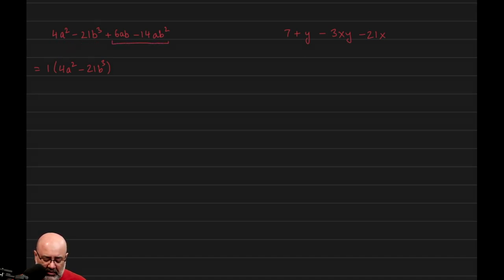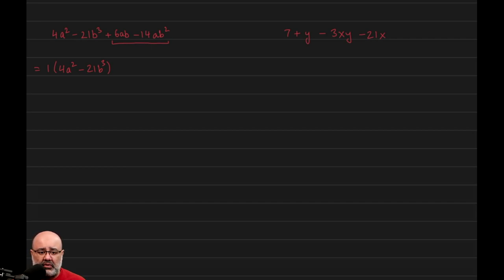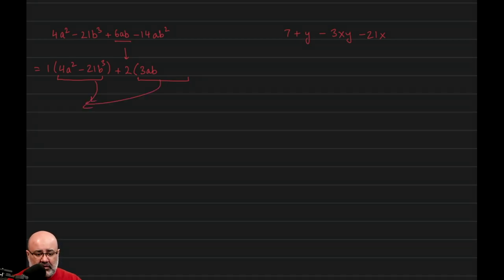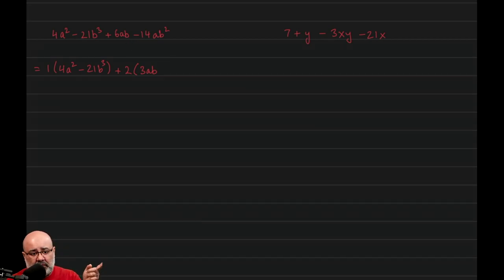Now between these two terms, the smallest number is 6. 6 goes into 6, yes, but 6 does not go into negative 14. So we try the next largest factor, which is 3. 3 doesn't go into negative 14 either. Then we try 2 — 2 works. So we factor out a 2, and then we divide 6ab by 2, which gives us 3ab. Right at this moment we can stop and say this is not going to work, because for the second stage of grouping, the stuff inside the parentheses has to be identical. 3ab is not present in either pair, so this approach is not going to work — a rearrangement is necessary.